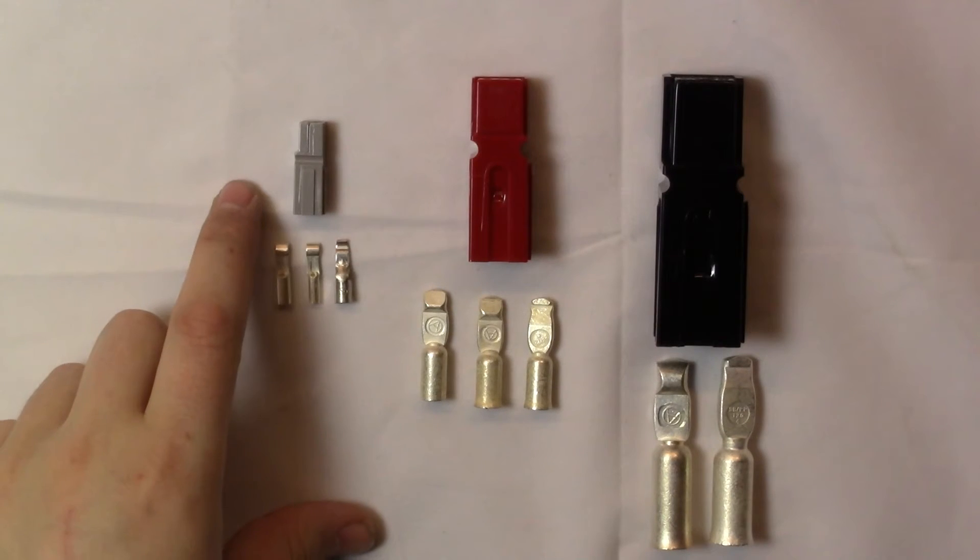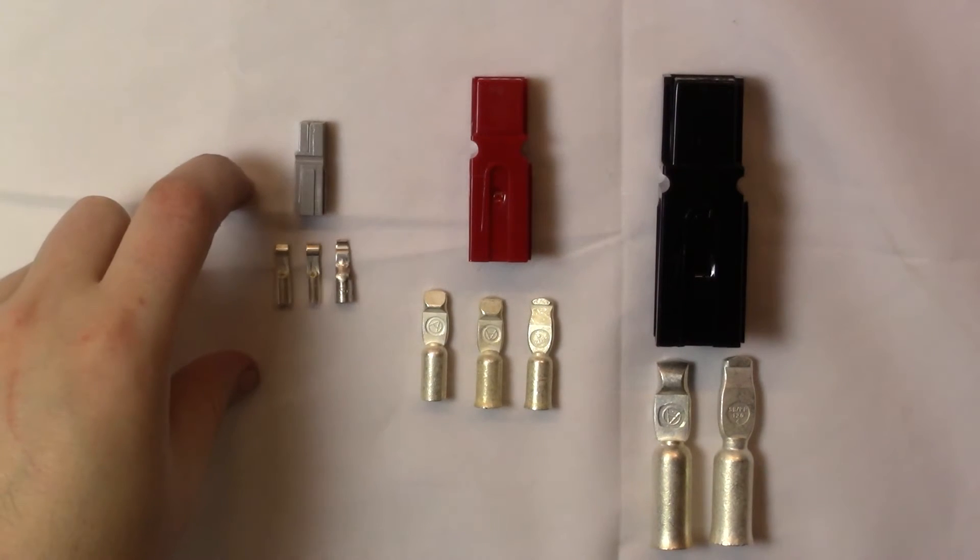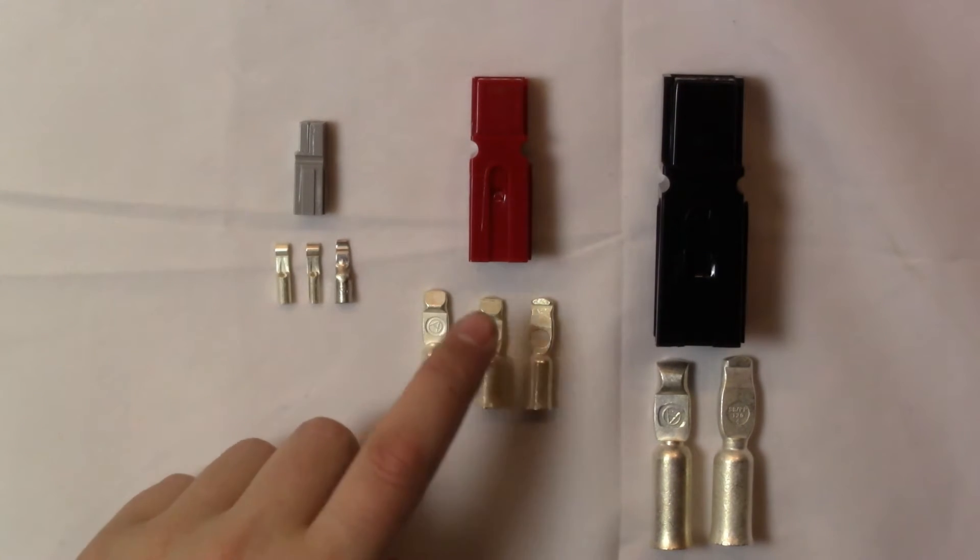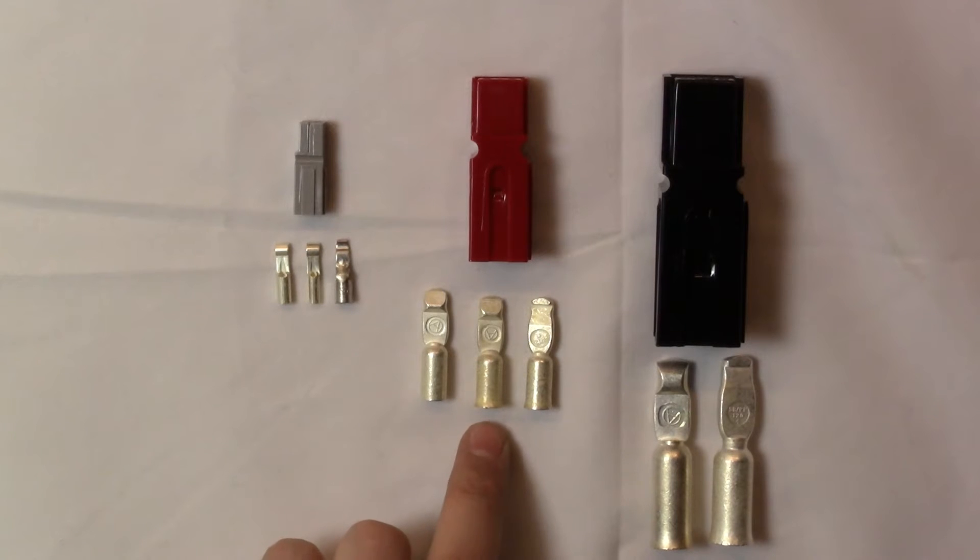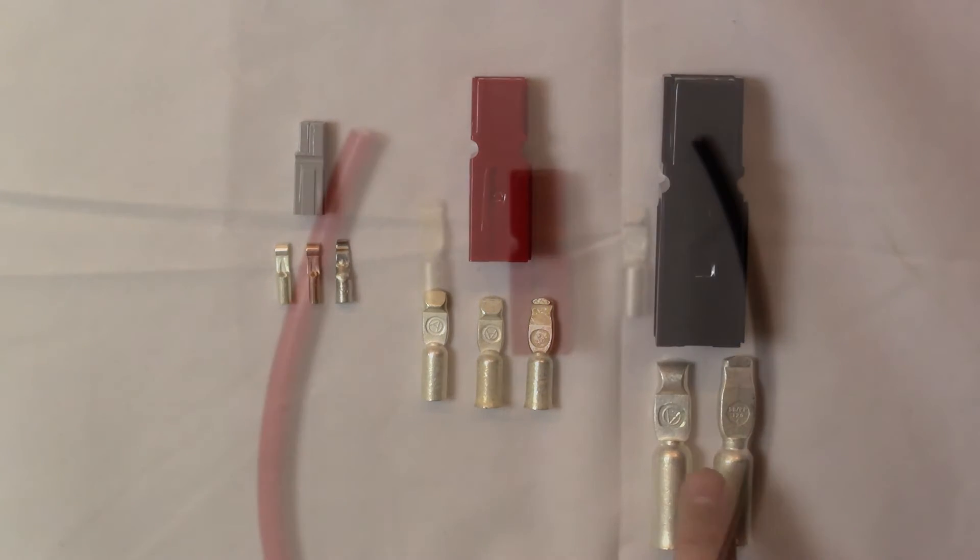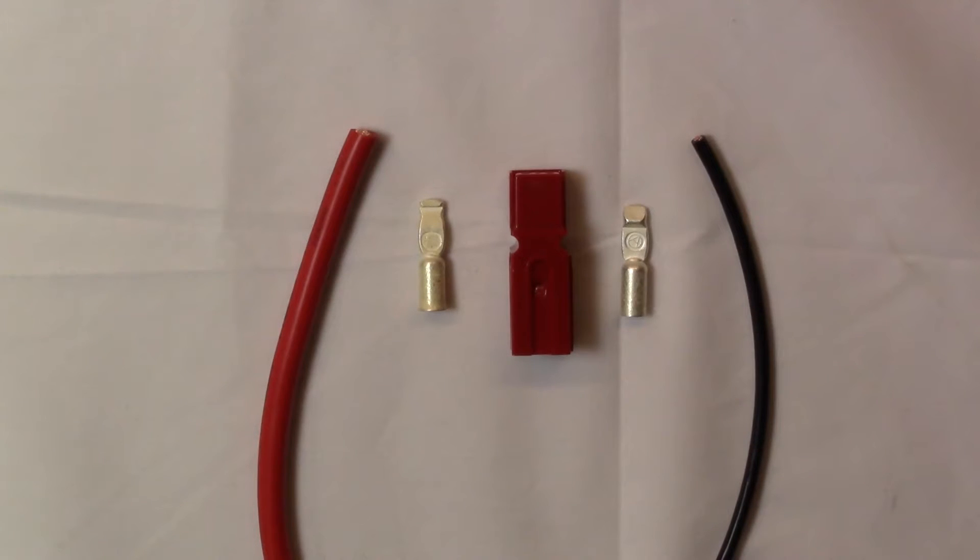Our smallest PowerPole housing can be used with terminals for 1.5, 3 and 6mm² cable while our middle can be used for 6, 10 and 16mm² cable and our largest can be used for 25 to 35mm² cable.